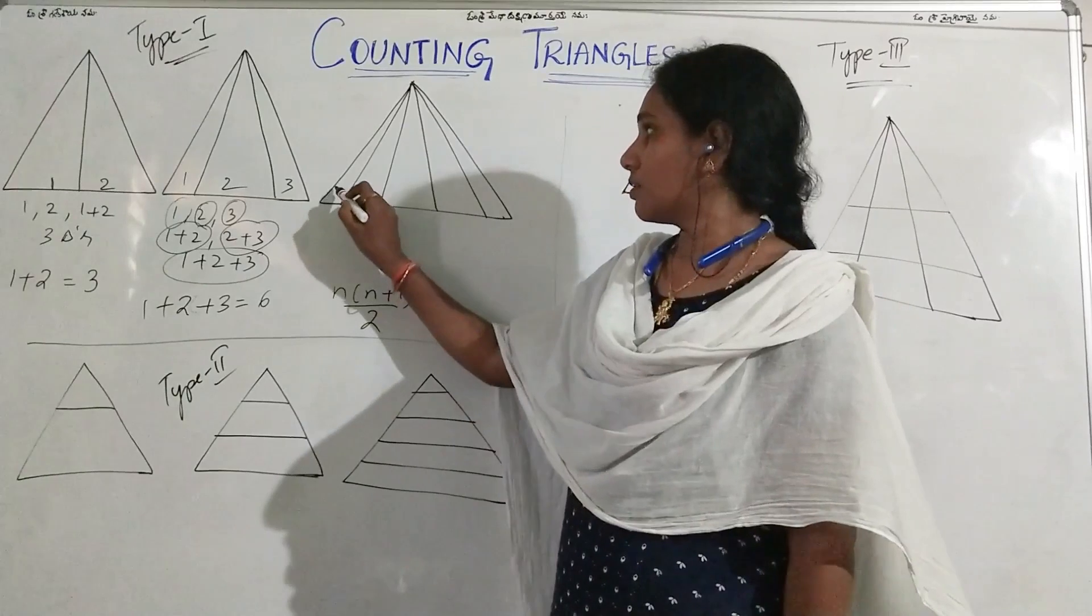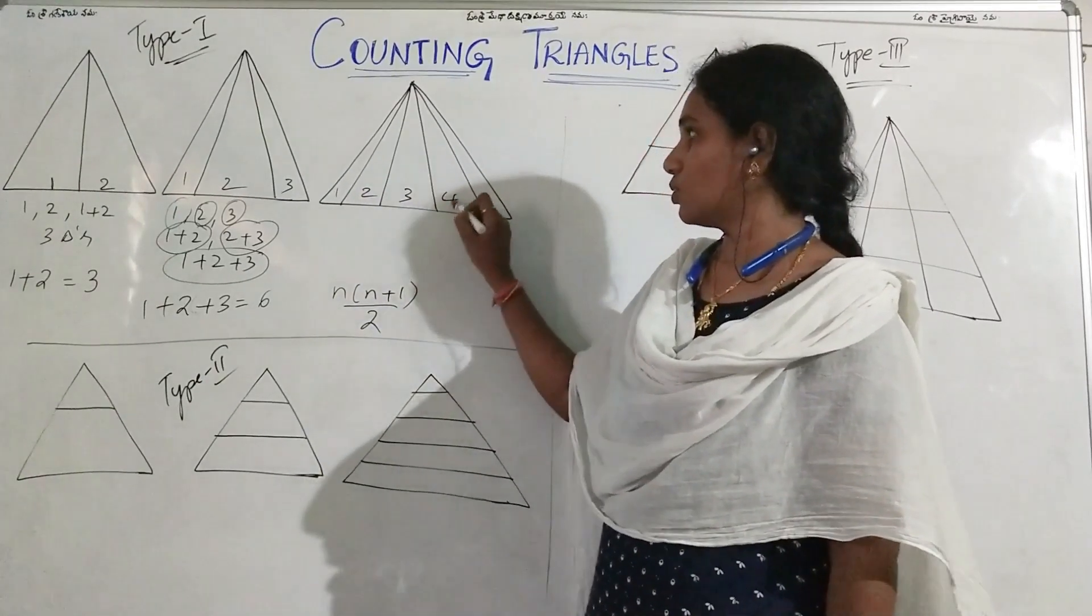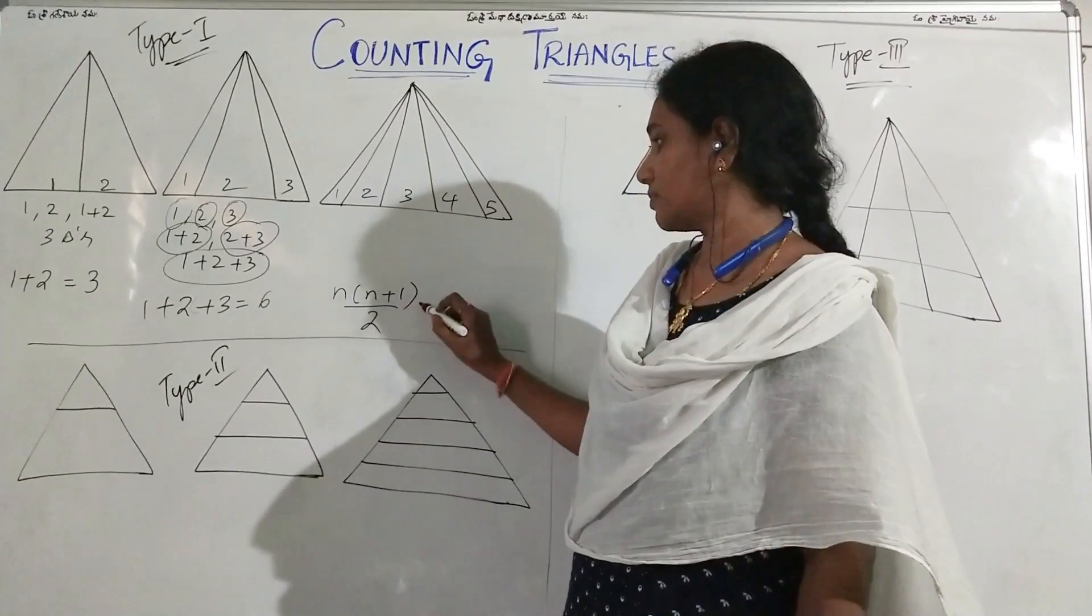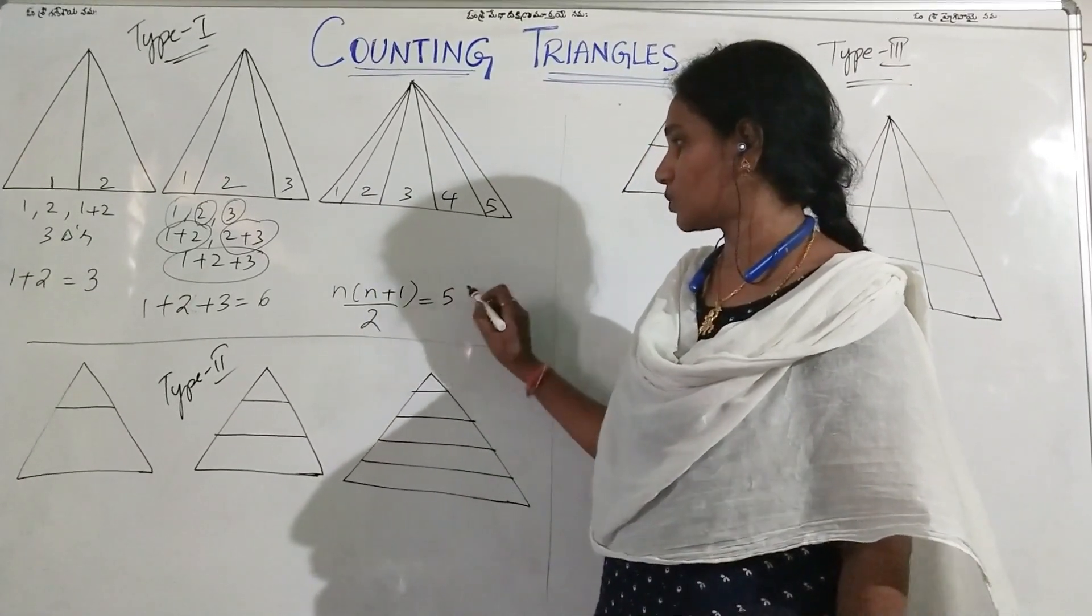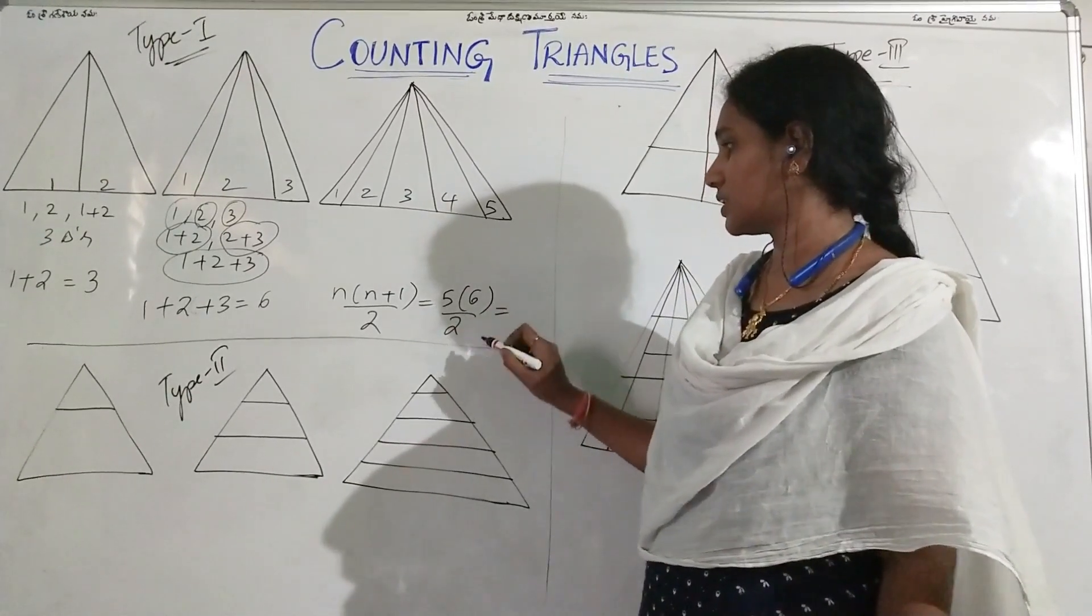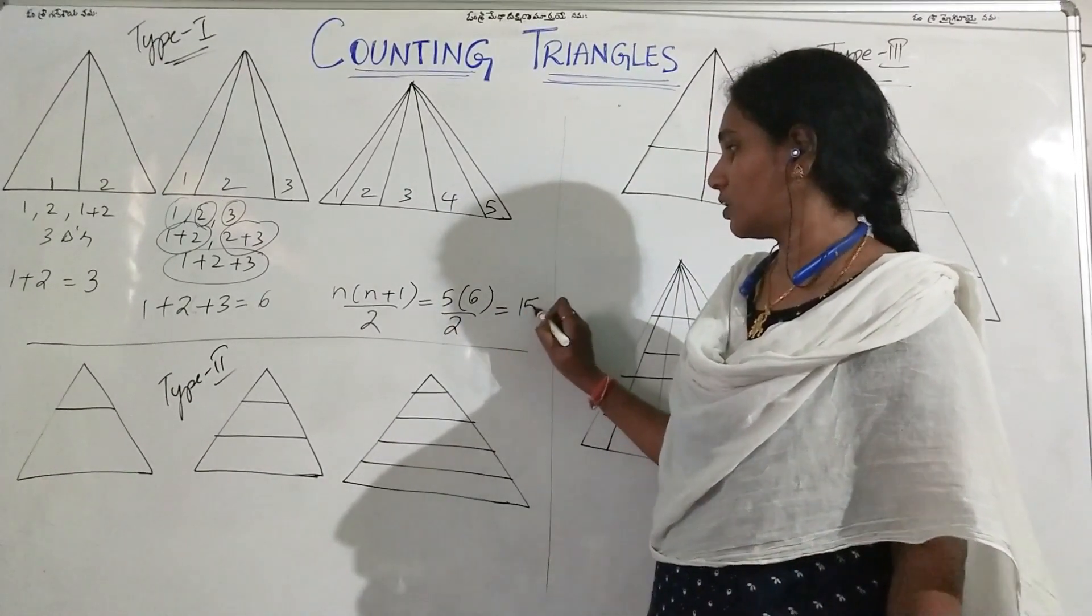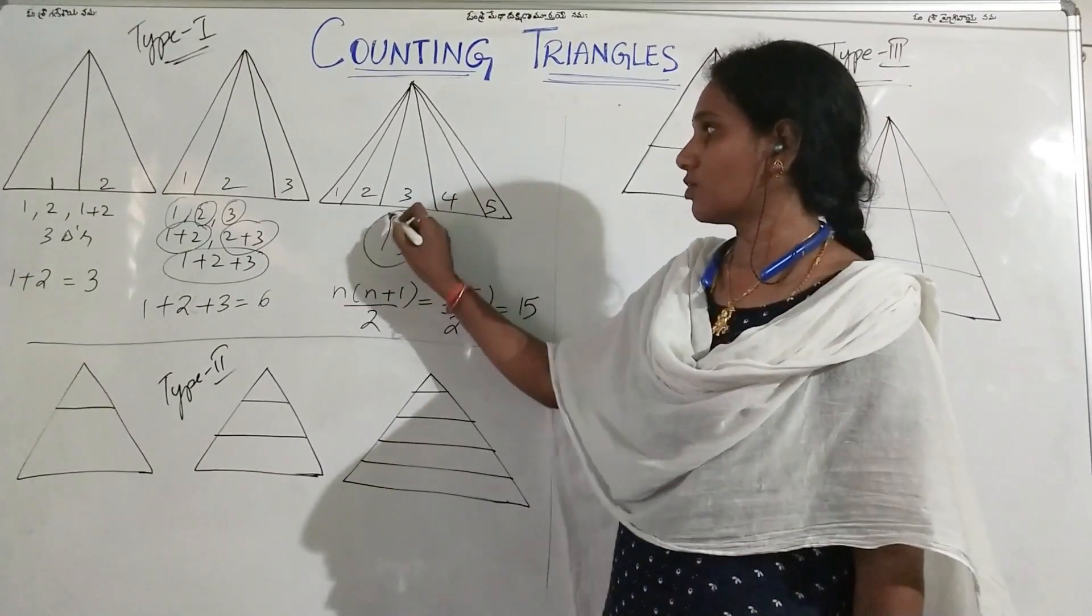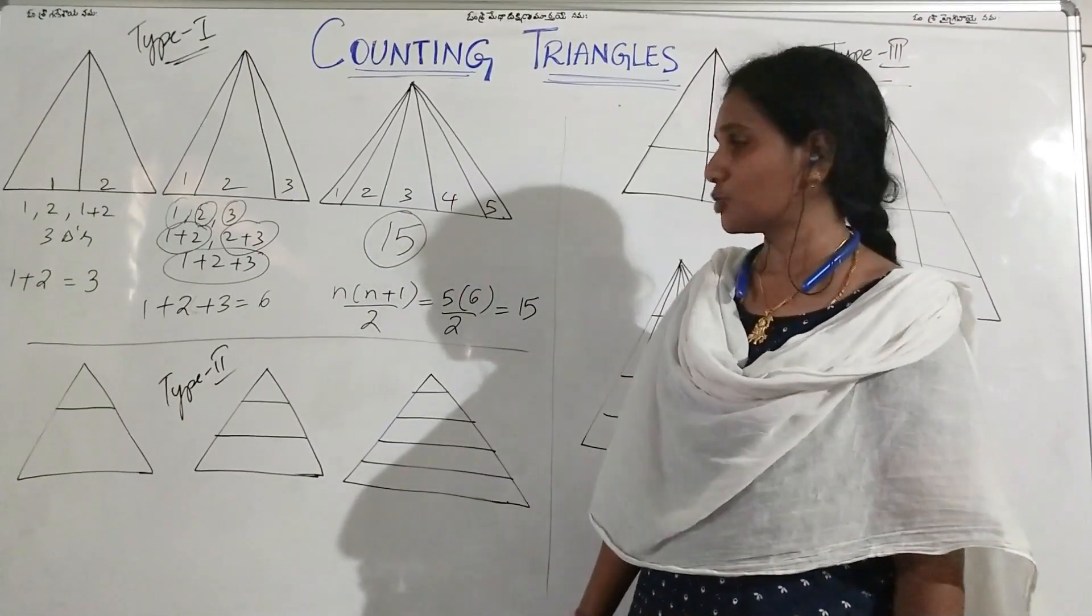Now let us apply this formula for this figure. Write the number 1, 2, 3, 4, 5. Now put n is equal to 5, so 5 into 5 plus 1 is 6 by 2, which is 5 into 3. In this triangle, in this figure, there are totally 15 triangles to be counted.